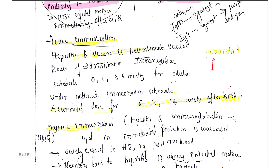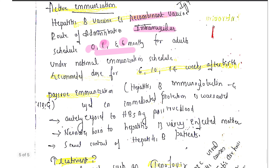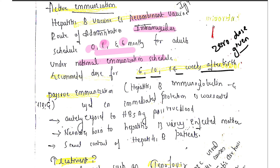The Hepatitis B vaccine is a recombinant vaccine administered via the intramuscular route. For adults, the schedule is: zero dose, then after one month, then after six months — three doses total. For infants, as per the national immunization schedule, zero dose is given at birth, followed by doses at six, ten, and fourteen weeks after birth.